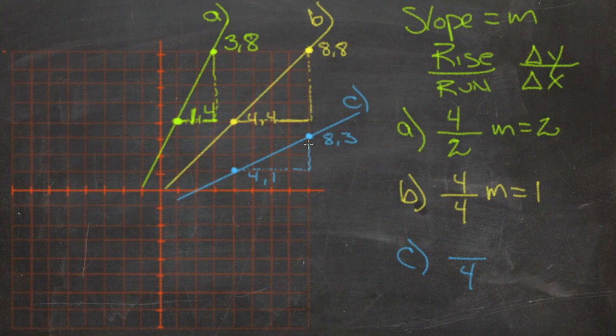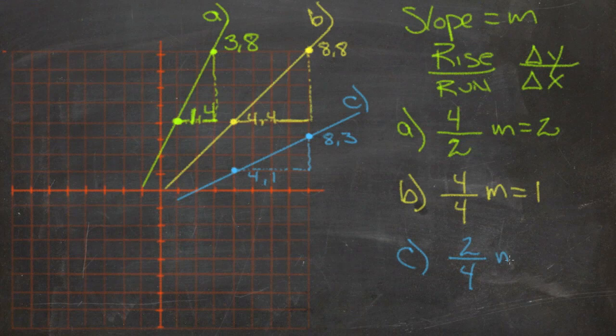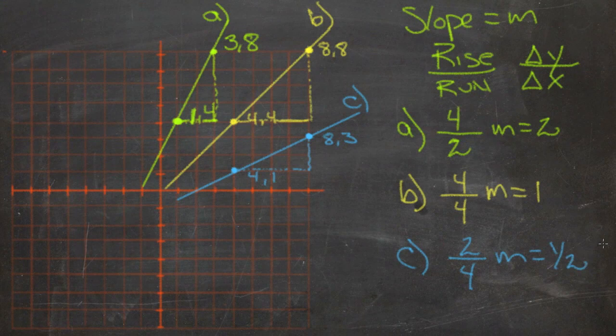And our change in y, or our rise, is going to be 2. Reduce 2 over 4 gives us an M of 1 half.